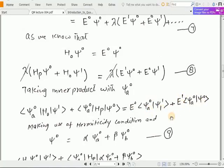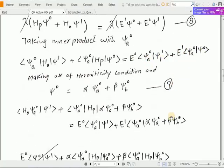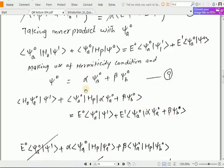Here we use the condition of hermiticity as ψ^0 can be expressed by the linear combination of the two states, wave functions ψ_a and ψ_b. On the right hand side we put the value of ψ^0.